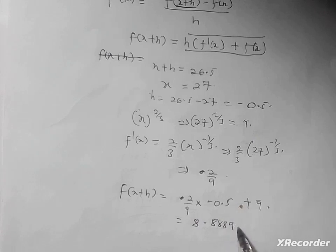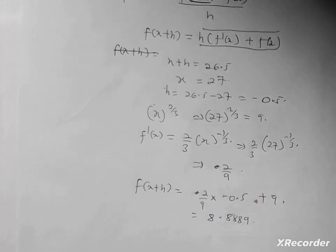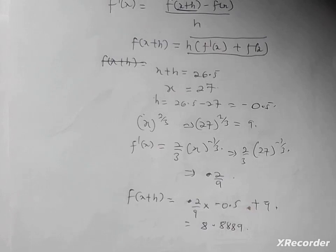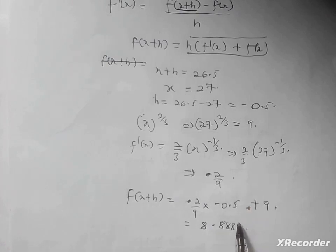So this is an estimation of what you have: 8.8889. You can try it out by testing 26.5 to the power 2/3, and you'll realize it's 8.8889. So using differentiation you can compute this simple small change. Thank you for watching this video, and don't forget to like, subscribe, and share.